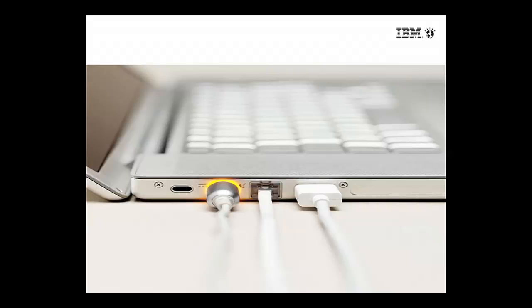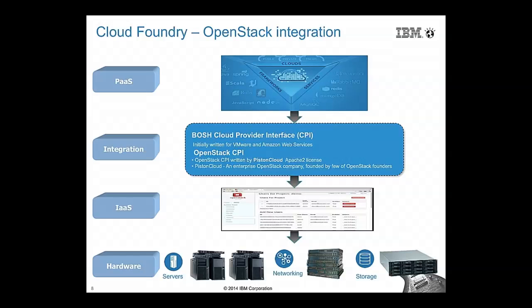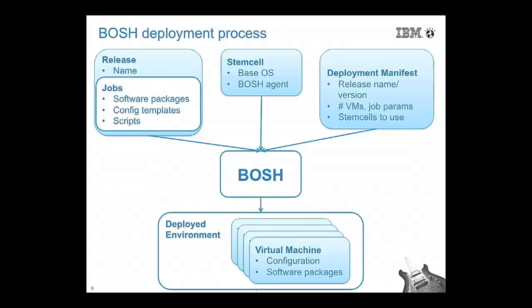So we investigated this, went back to our boss, and said Cloud Foundry seems like a very good fit. The next thing he asked: can you integrate it on top of OpenStack? Cloud Foundry uses a tool called Bosh, which is a release, deployment, and lifecycle management tool that allows you to deploy Cloud Foundry on different IaaS platforms — VMware, Amazon Web Services — and in the case of OpenStack it uses the OpenStack CPI, or Cloud Provider Interface.